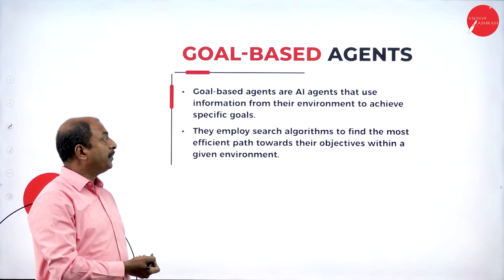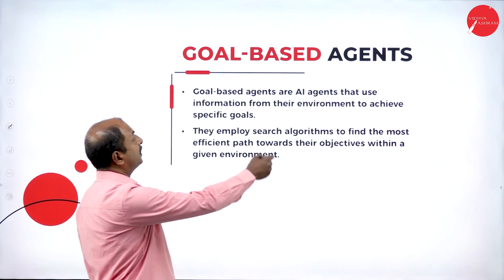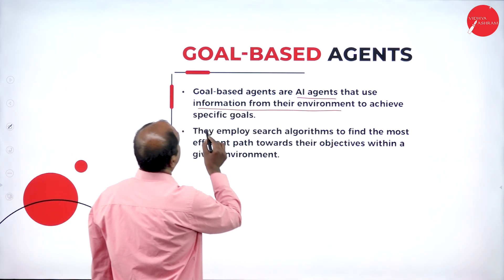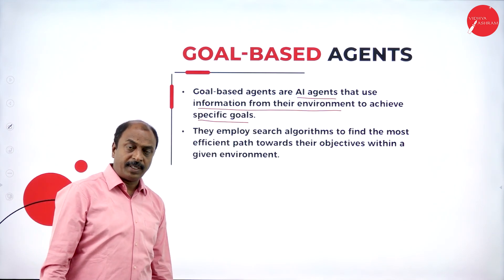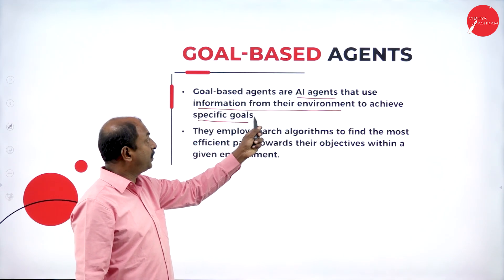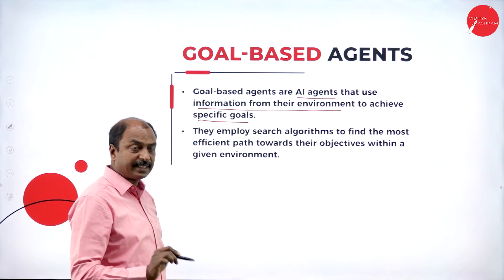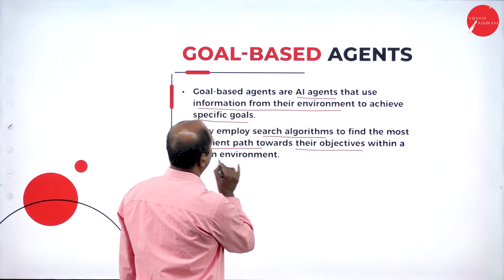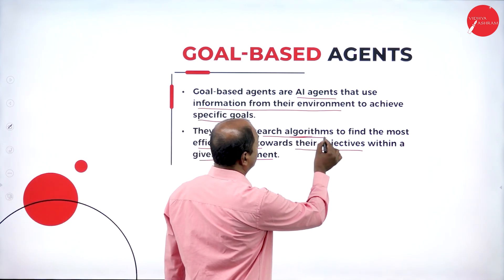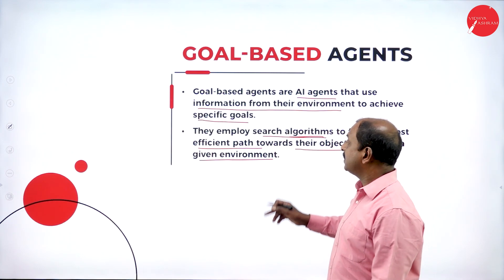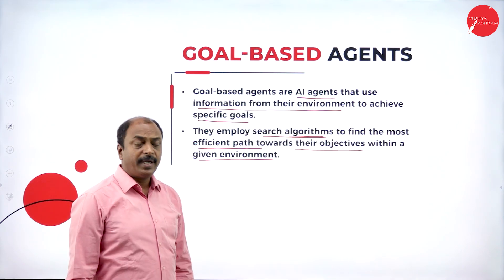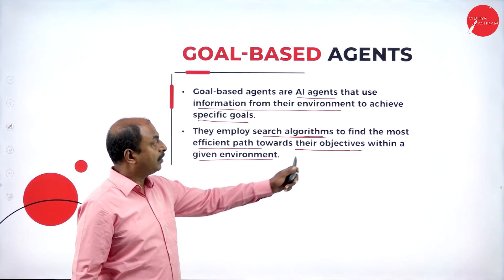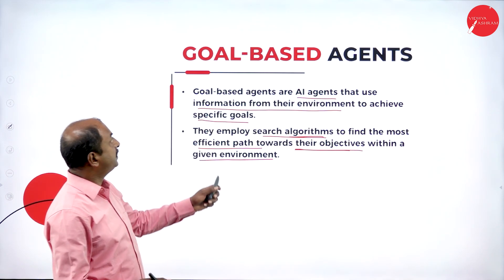So what is the definition of goal based agent? These are agents that use information from the environment to achieve specific goals. They perceive the environment through sensors and employ search algorithms to find the most efficient path towards the objective within a given environment. It uses predefined programs to reach a particular or specific goal. By using different search algorithms, it selects a particular algorithm to move towards reaching its goal. That is the definition of goal based agent.